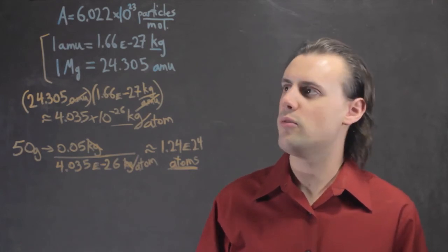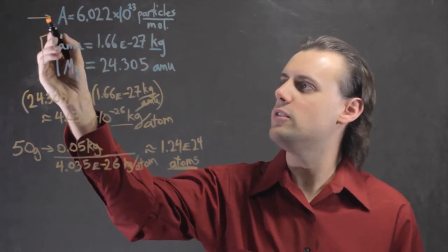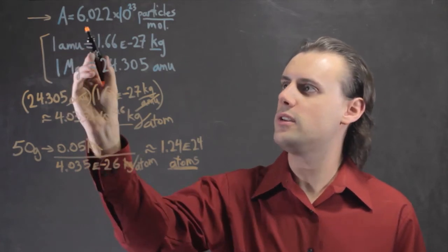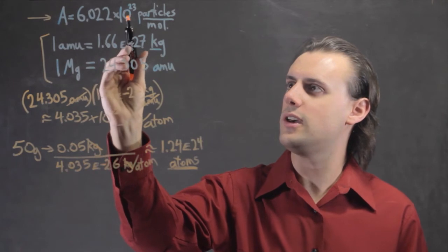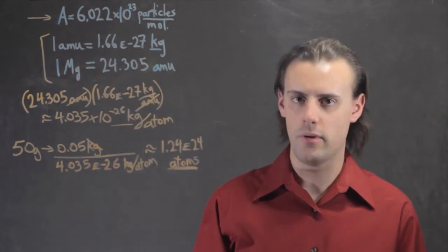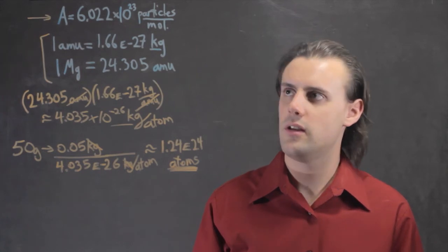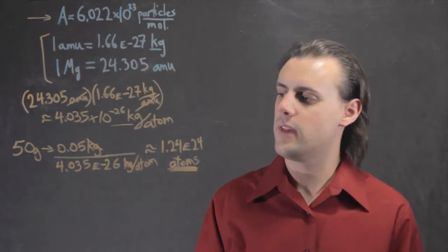For that, we need to use Avogadro's number, which is approximately equal to 6.022 times 10 to the 23 particles per mole. In this case, we're using atoms to substitute particles.